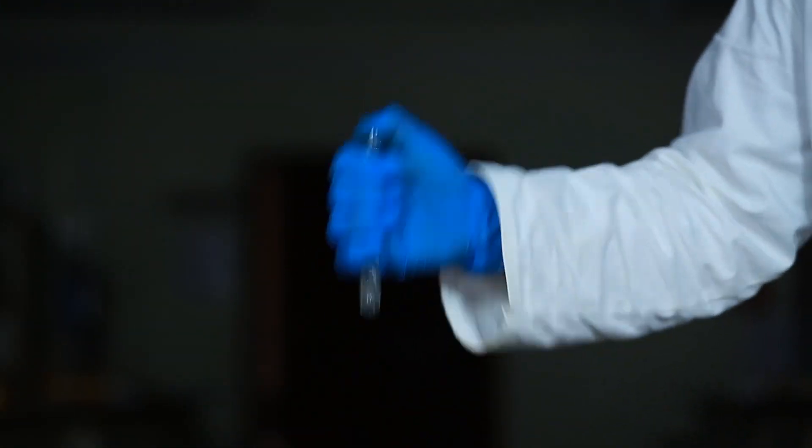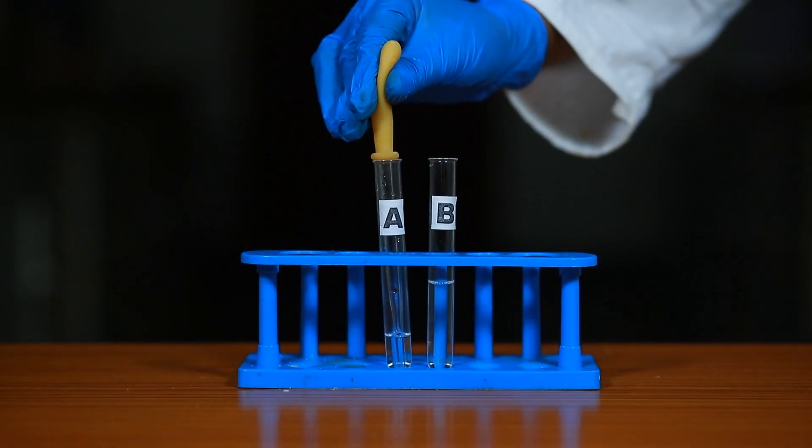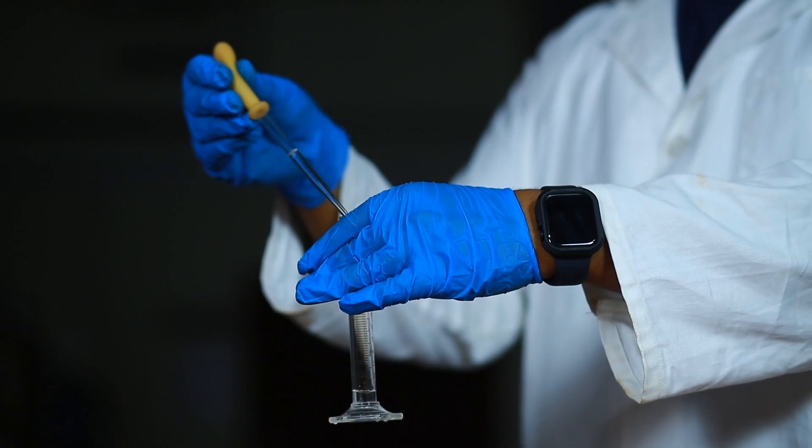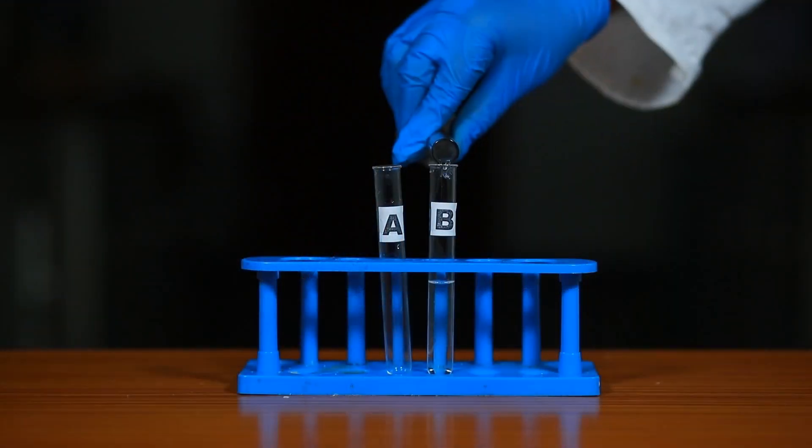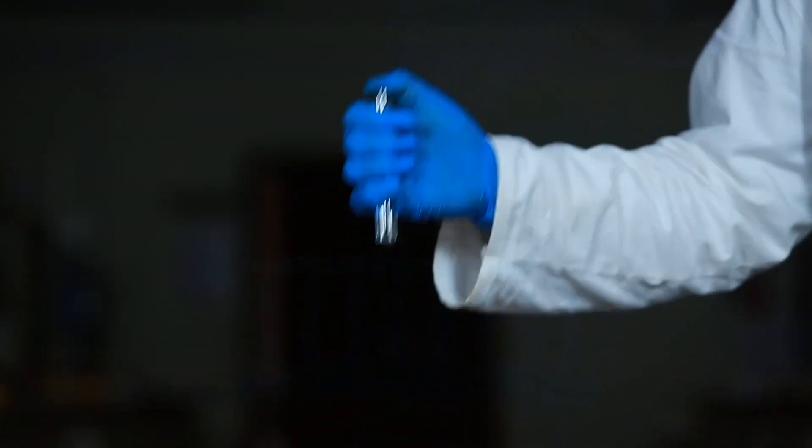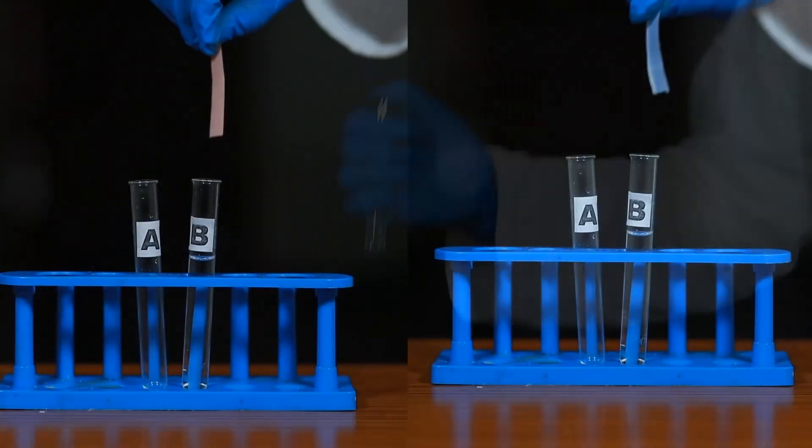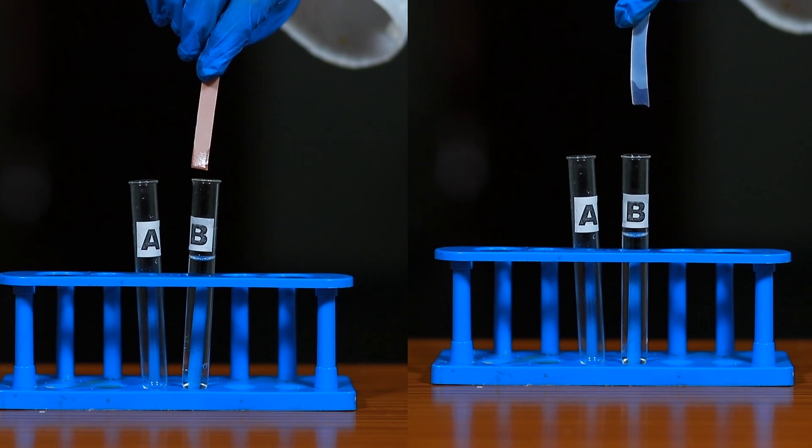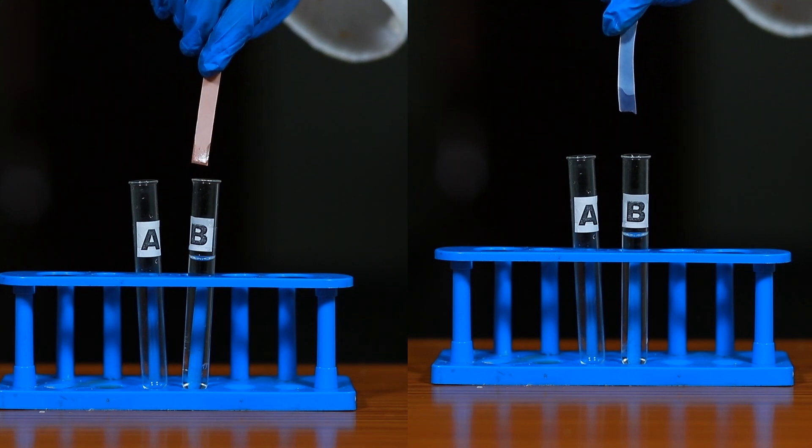Keep on adding the dilute HCl 3 ml from test tube A to dilute NaOH in test tube B drop-wise till the reaction mixture in test tube B becomes neutral to litmus paper, showing no color change of blue and red litmus when pH of the solution is 7.